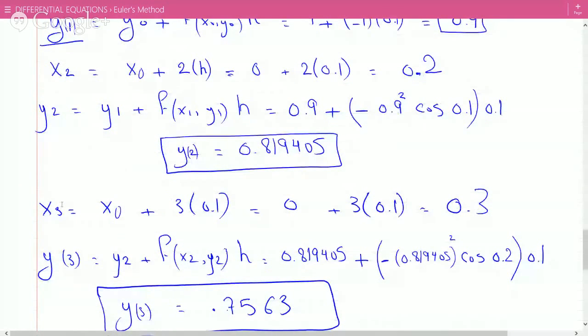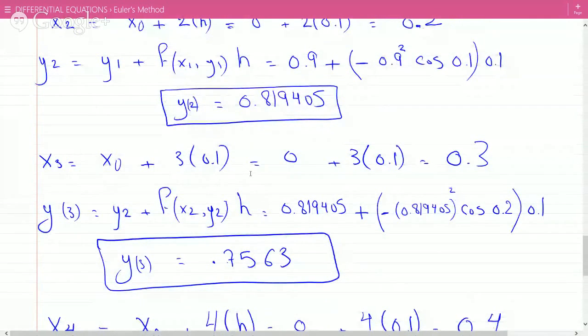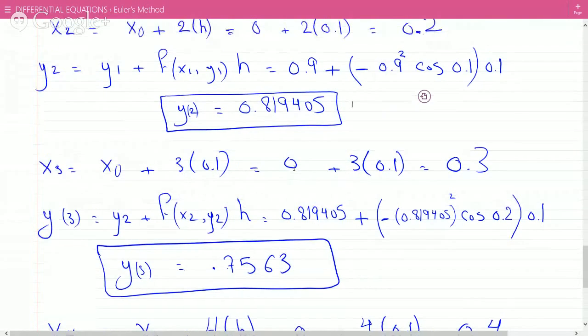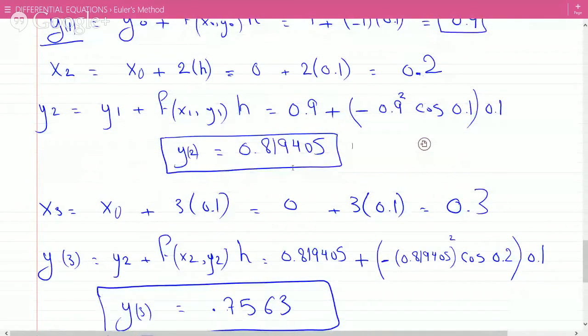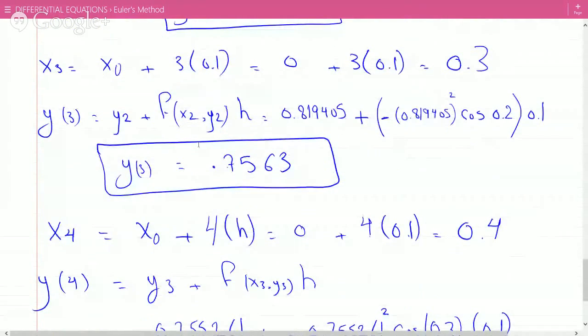To go to y3, iterate y2 + f(x2, y2)h. That's our y2 from this step, plus the derivative evaluated at (x2, y2) = (0.2, 0.819405) plugged into -y² cos(x), times h, giving y3 = 0.7563.